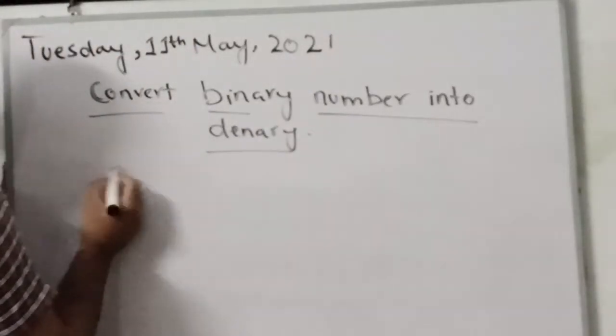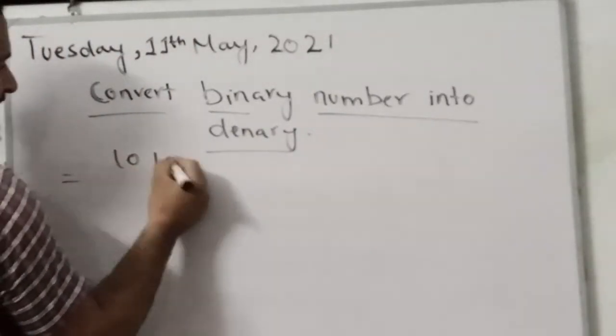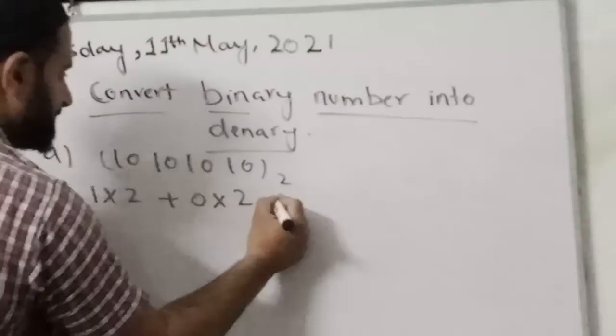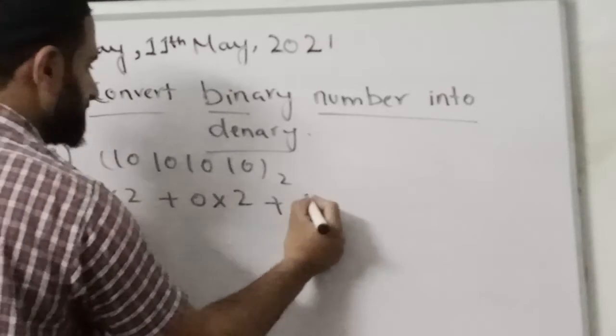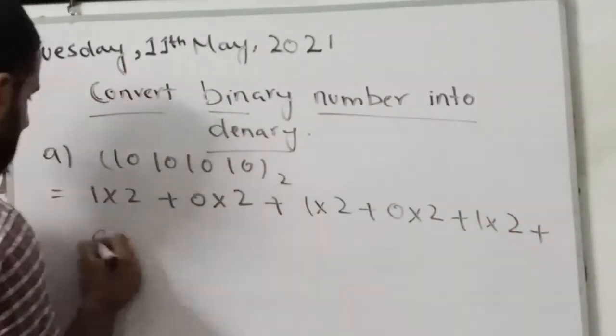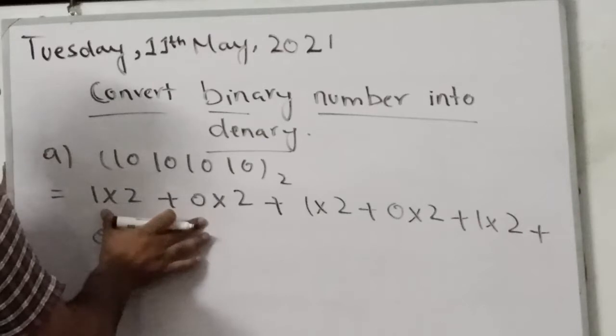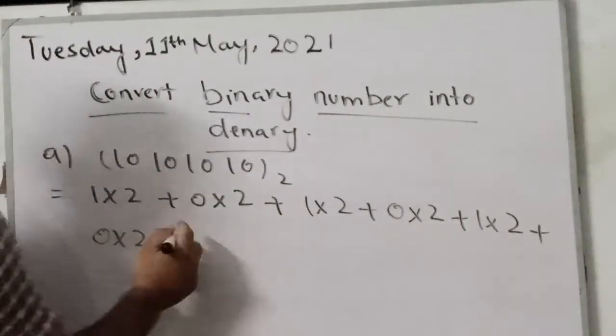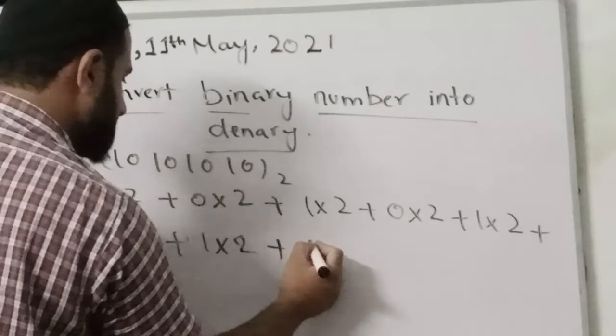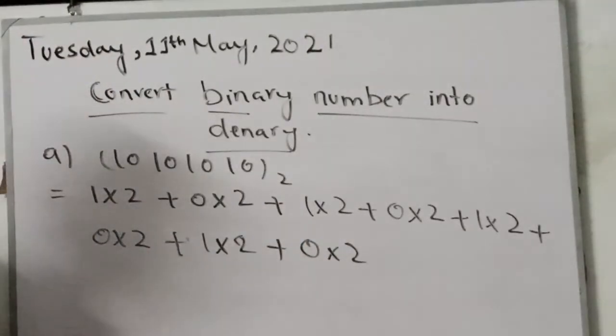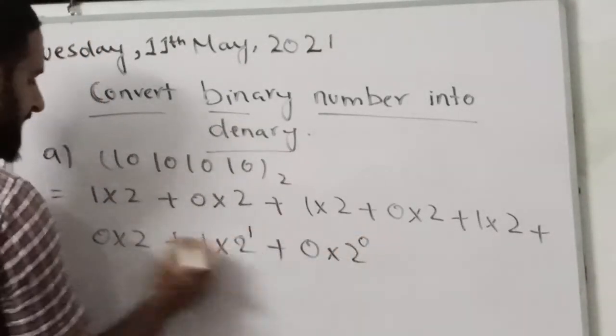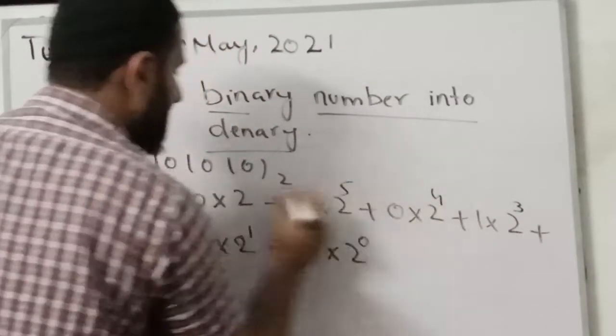So here I have converted this 01010101. I have taken start like that, multiply each digit with base 2, then 1 times 2 plus 0 times 2 plus 1 times 2 plus 0 times 2. In the next step, you need to put powers here starting from the right side: 2 raise power 0, 2 raise power 1, 2 raise power 2, 2 raise power 3, 4, 5, 6, and 7.